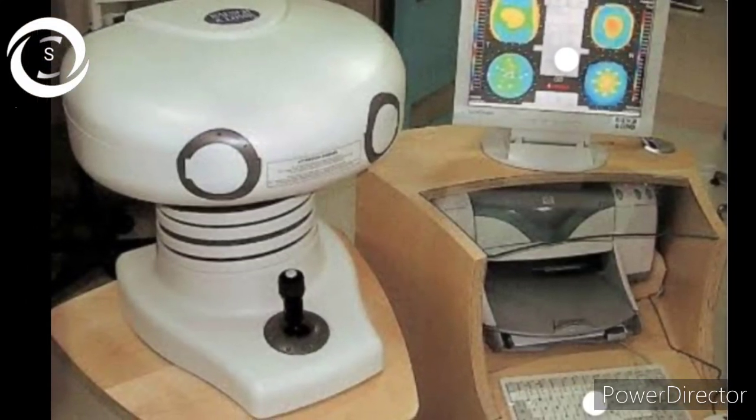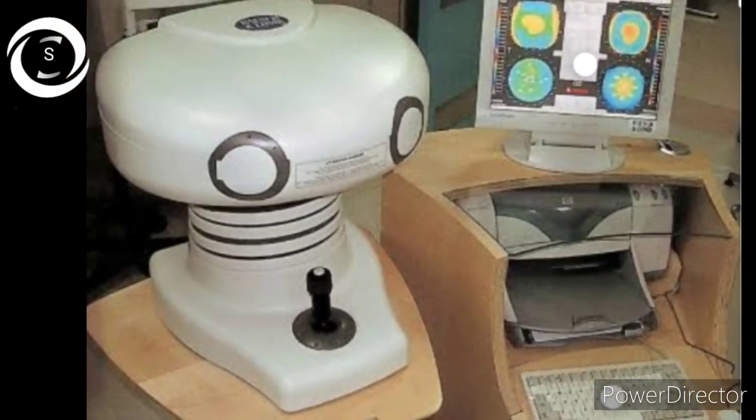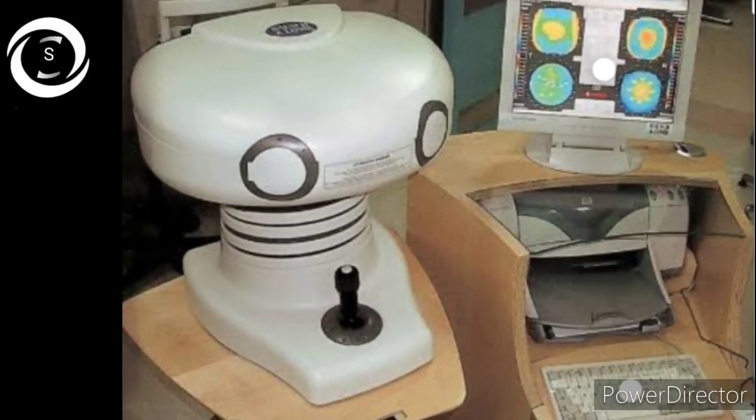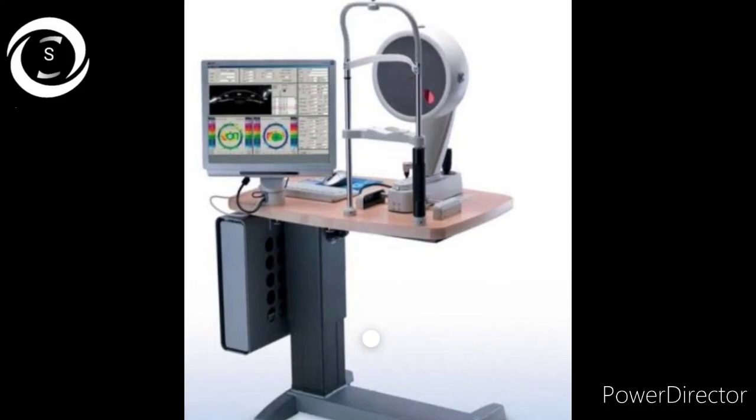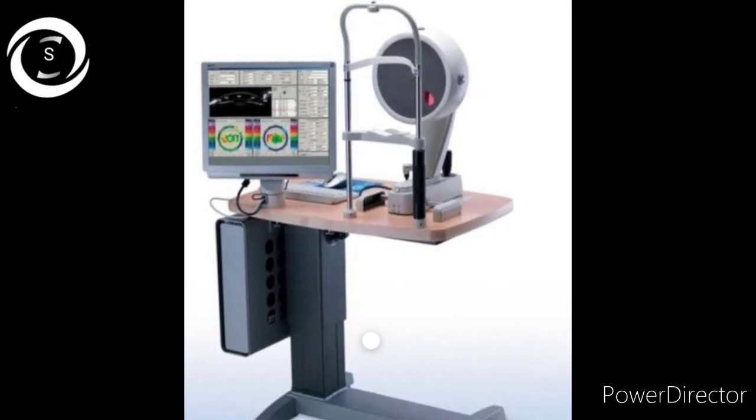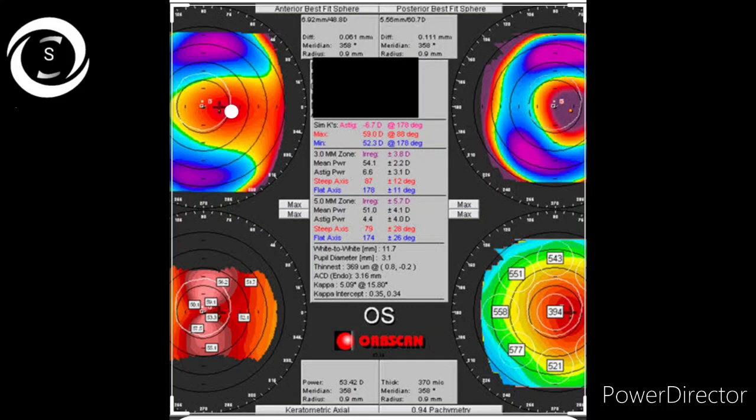So orb scan uses a scanning slit technique whereas penta cam uses a Scheimpflug rotating cam technique. The last technique uses a rotating camera that enables us to catch both anterior and posterior surfaces of the cornea. That is Scheimpflug imaging technique to photograph corneal cross sections illuminated by slit beams at different angles. That's the penta cam, and if you use a dual Scheimpflug rotating cam then that is Galilee.